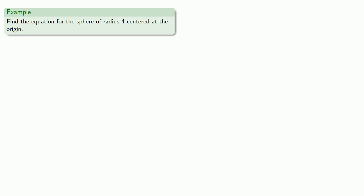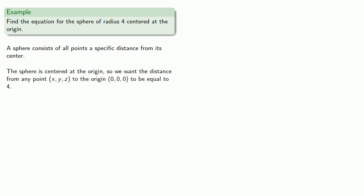So, for example, let's say we want to find the equation of the sphere of radius 4 centered at the origin. So, here it's helpful to remember that a sphere consists of all points a specific distance from its center. Now, the sphere is centered at the origin. So, we want the distance from any point x, y, z on the sphere to the origin to be equal to 4.